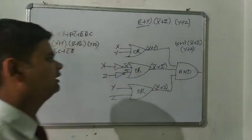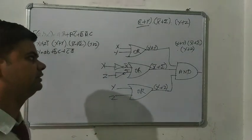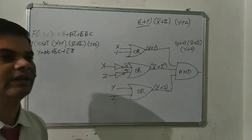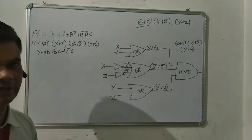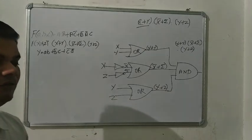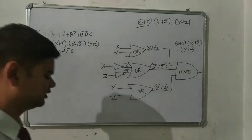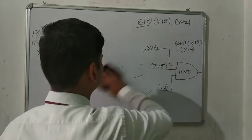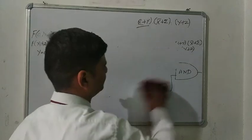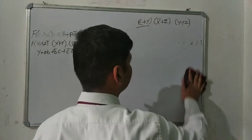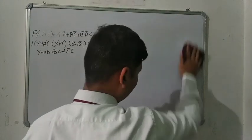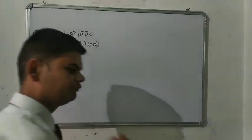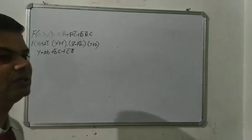So with the help of the AND and OR gates, we define and solve the particular expression. This is the final output. Now we have to discuss one more example. This is a very important topic of this chapter and one question will definitely come 100% in your exam.